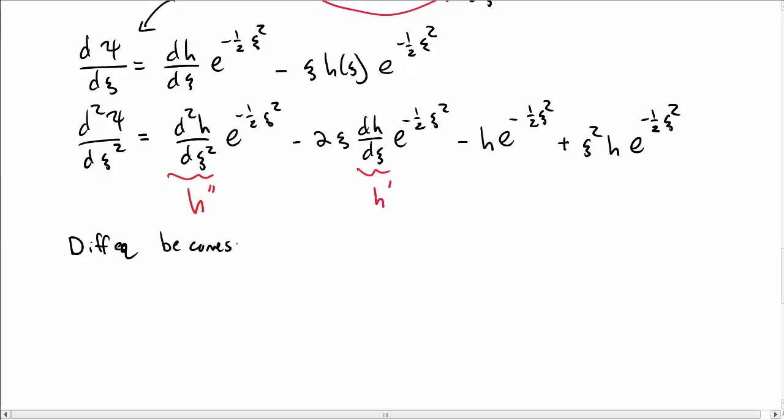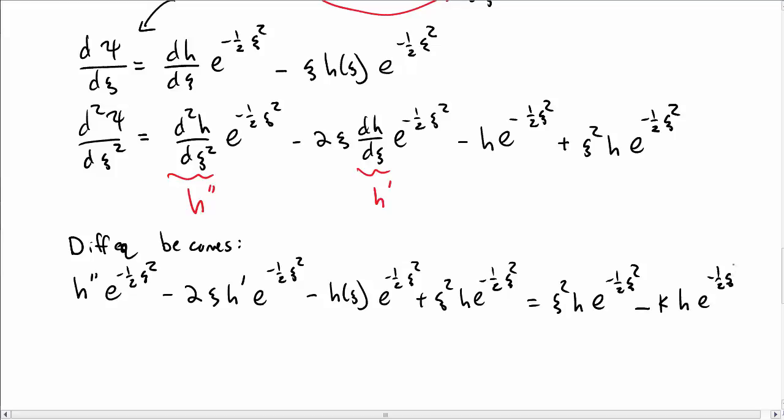Okay, so our differential equation from above now becomes—plugging in for the second derivative of ψ—I get this expression. I promise this is going to come out much better. It doesn't look like it right now. Okay, so that's the left-hand side. On the right-hand side I have ξ² times ψ minus K times ψ. I immediately notice I can cancel some terms. That's kind of nice. I can cancel these two terms, and there's a common factor of the exponent everywhere so I'll cancel that out.